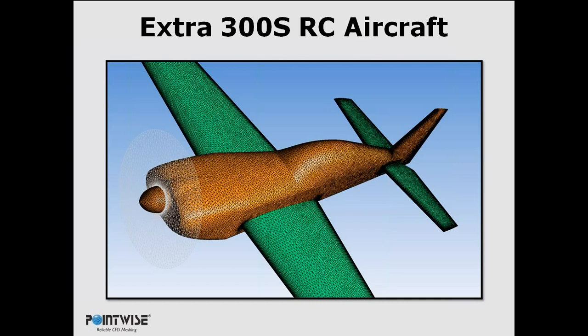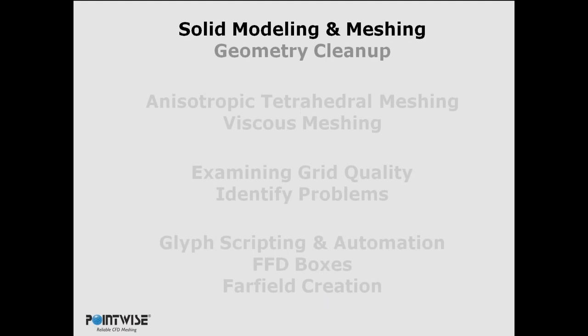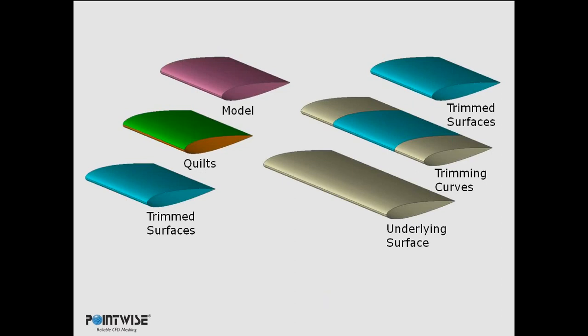The first thing is solid modeling and meshing — geometry cleanup. Before I launch into that, I need to cover some terminology for PointWise geometry. In PointWise, when you bring in geometry, you'll be seeing quilts and models. Quilts and models are, for all intents and purposes, geometry to you, but they're not. They're just information about the geometry that's actually underneath, and they're only there for meshing. We create those entities specifically to make meshing easier for complex geometries.